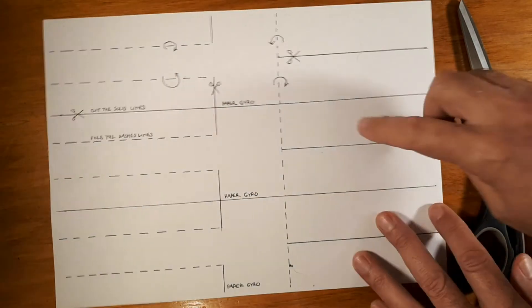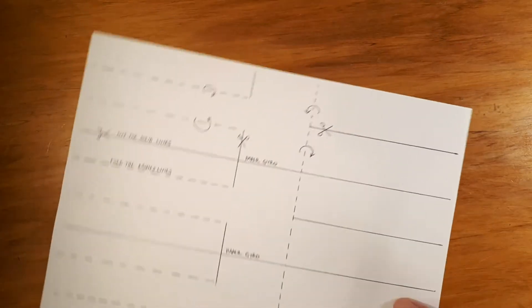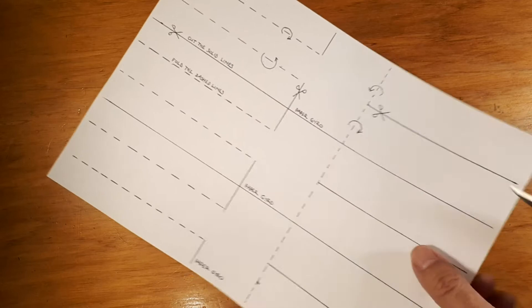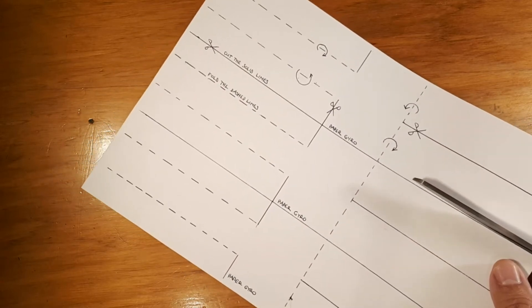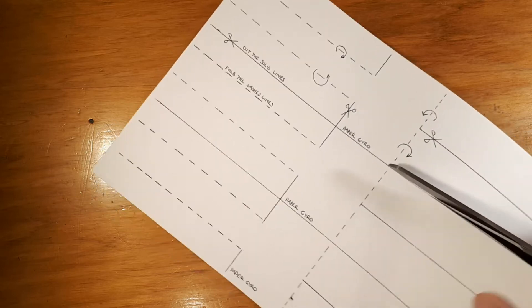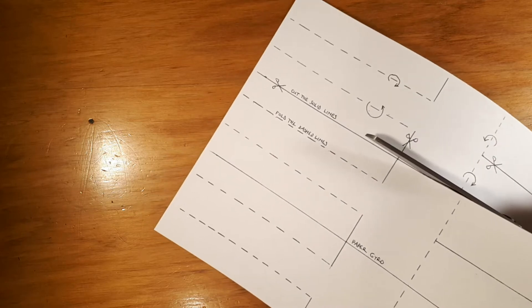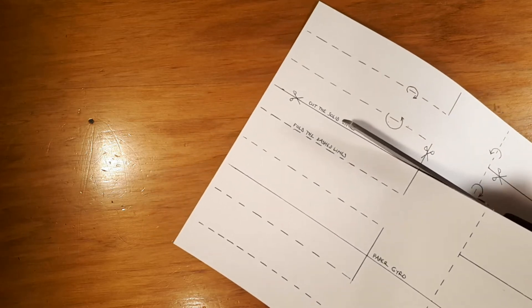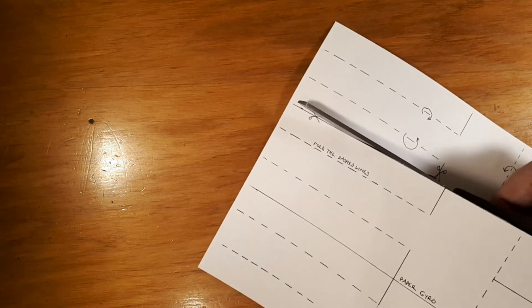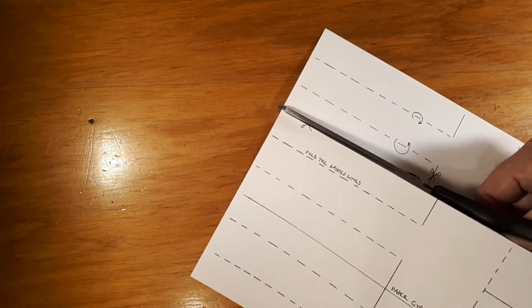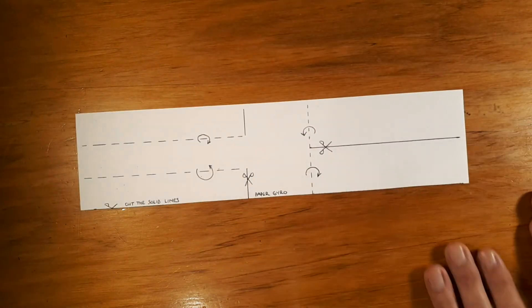So this template makes three gyros. So what we're going to do is just make one to start with. On here the lines that you cut are solid lines, so the lines that you fold are dashed. Pop that aside, that's all you need to start with.